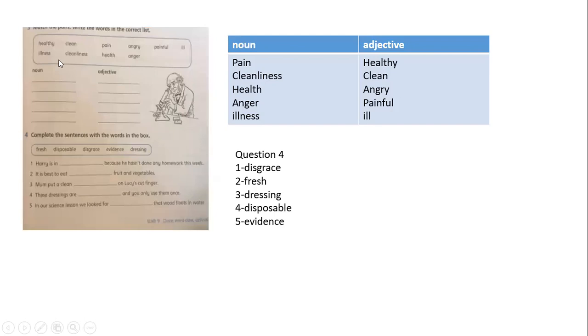And Lister said that an instrument must be cleaned before and after each operation. Yes, next question, question number two. Here we have healthy, clean, pain, angry, painful, illness, cleanliness, health, and anger. We are going to divide these words into noun and adjective. Pain, cleanliness, health, anger, and illness, all these words are related to the noun.